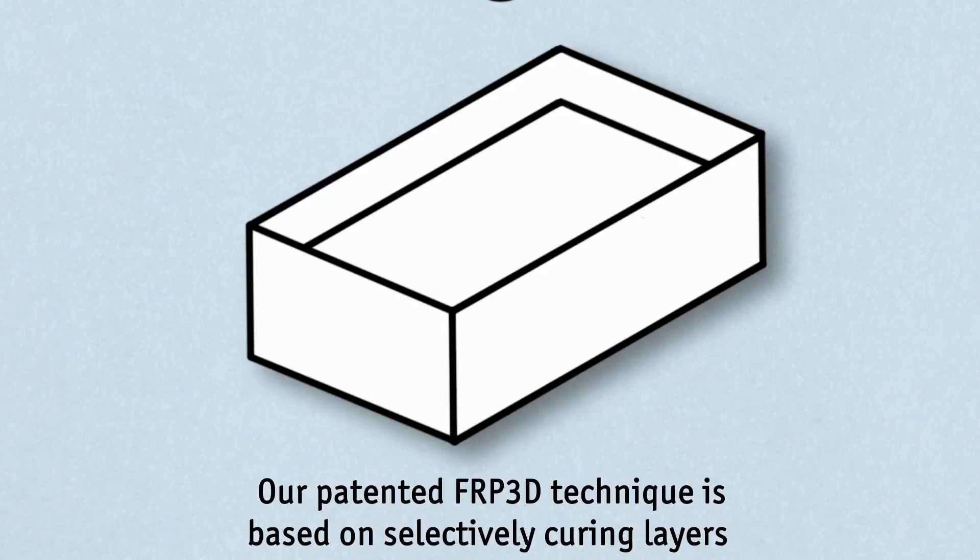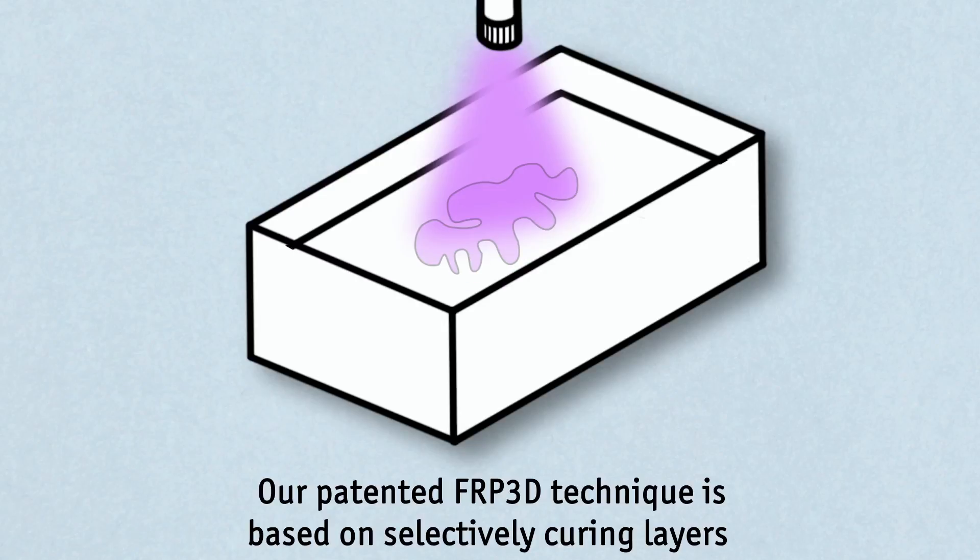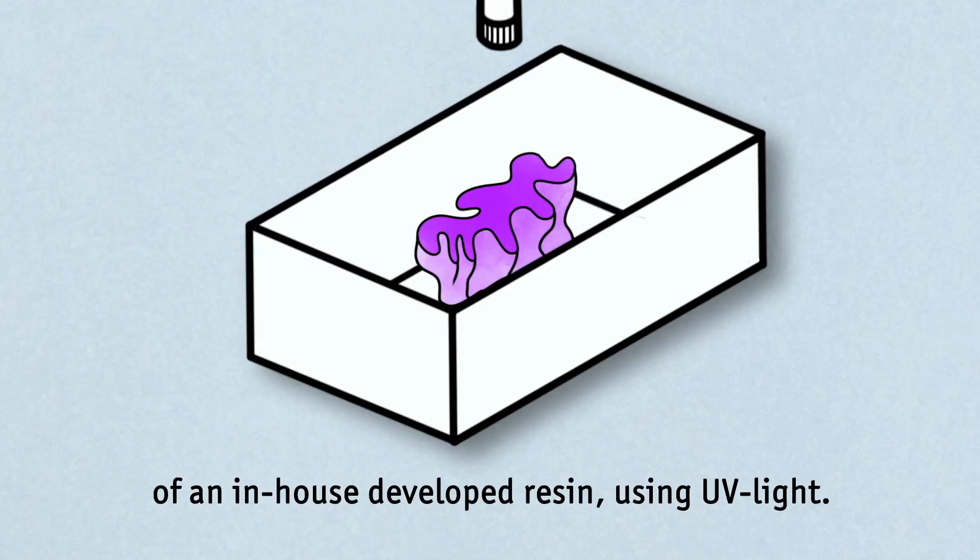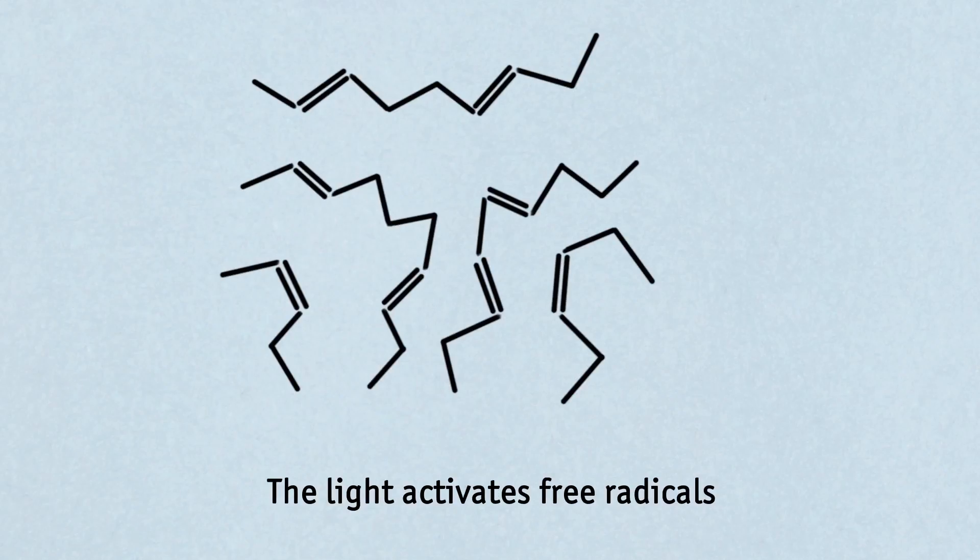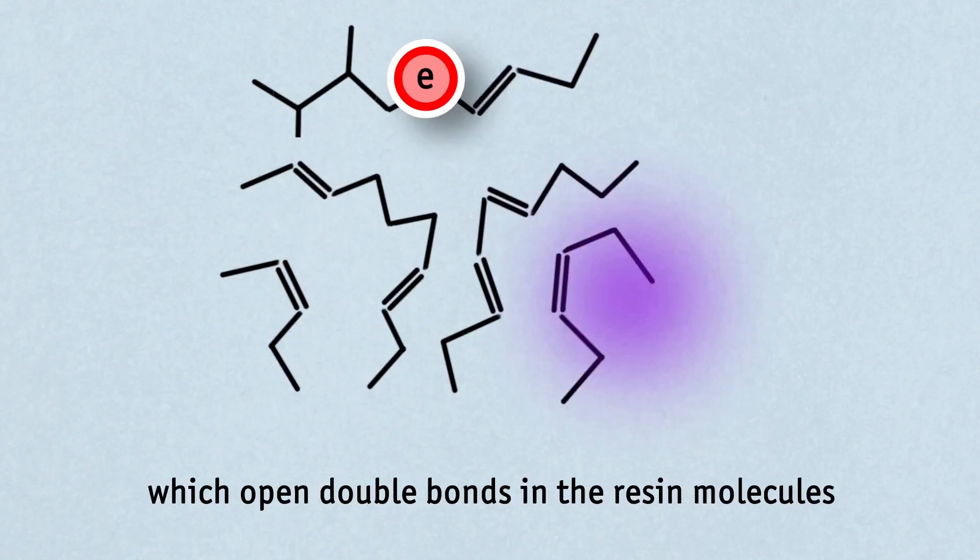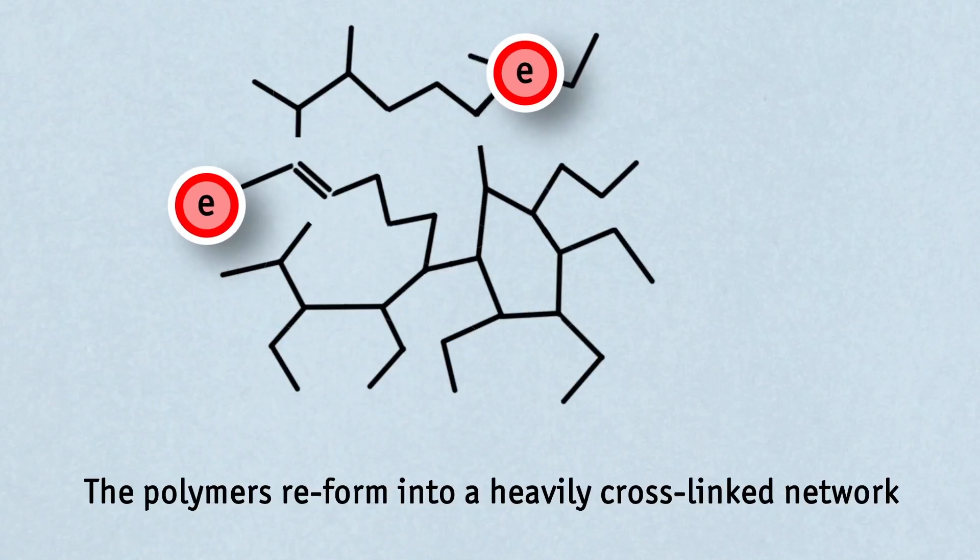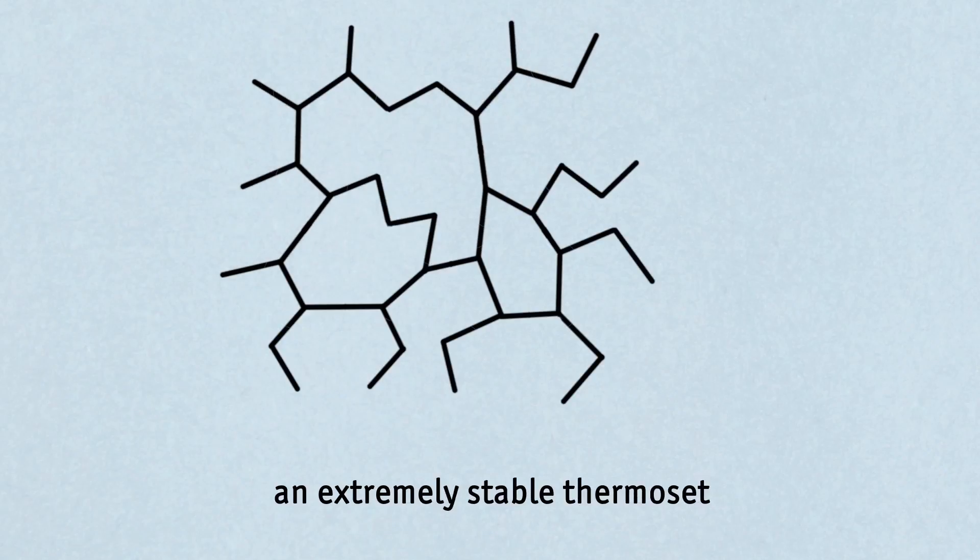Our patented FRP3D technique is based on selectively curing layers of an in-house developed resin, using UV light. The light activates free radicals, which open double bonds in the resin molecules. The polymers reform into a heavily cross-linked network, an extremely stable thermoset.